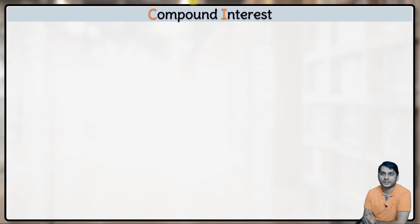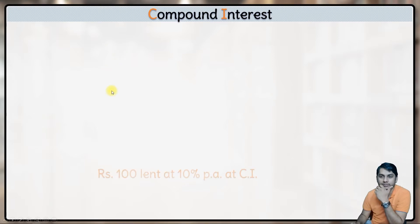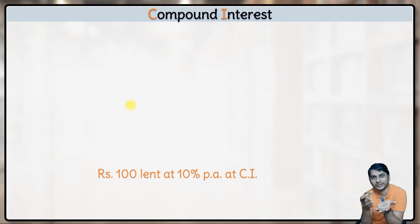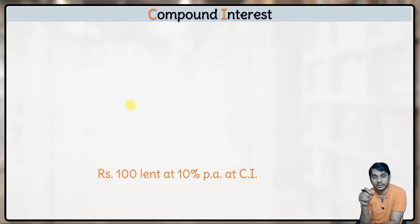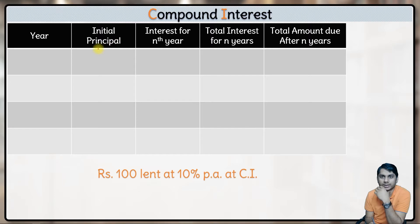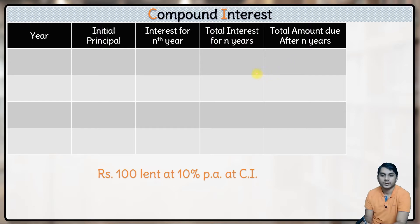So now, if we simply assume what compound interest is — let's say rupees 100 is lent at 10 percent per annum. As we saw in the previous video where we drew a table showing what is happening with that 100 rupees — what is the interest, total interest — we will look at the same here. We'll be talking about which year: first, second, third or fourth; the initial principal; the interest for the nth year; total interest for n years; and the amount due after n years.